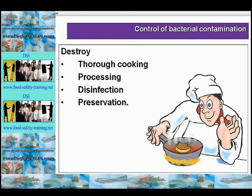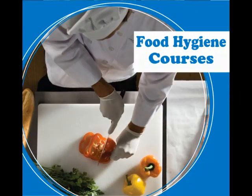So in summary, controls involve removing the sources, preventing contamination of food by breaking the route, preventing the multiplication of bacteria, destroying bacteria, and also destroying unfit, suspect or contaminated food.